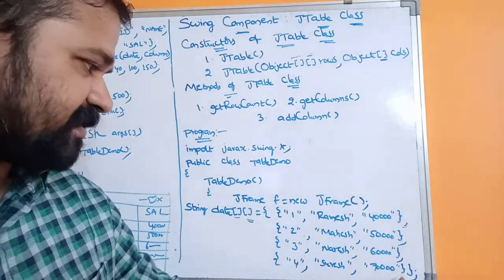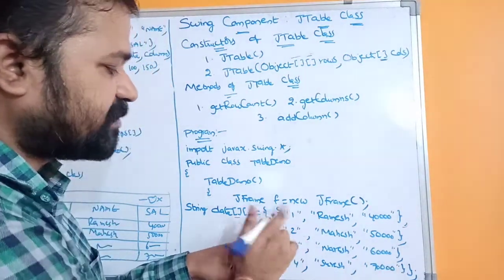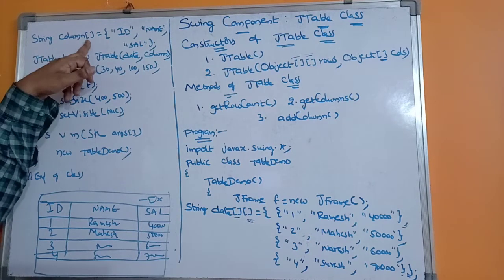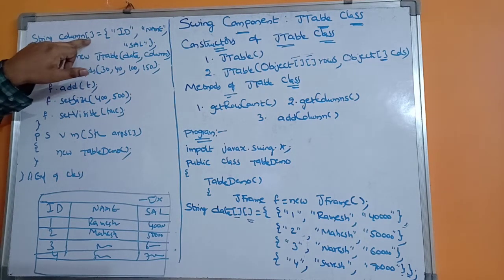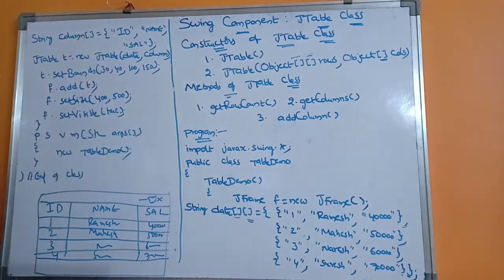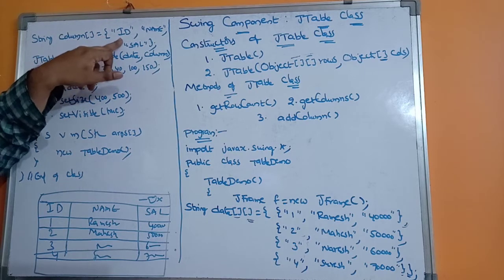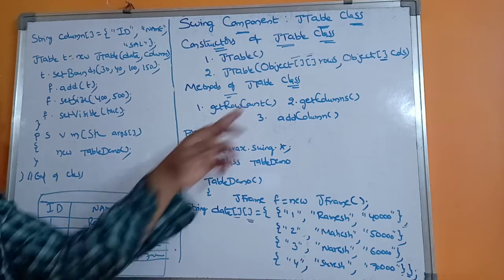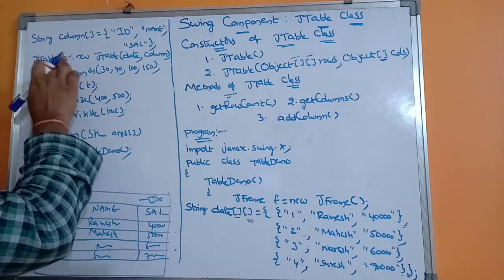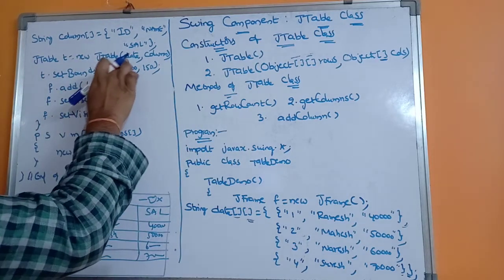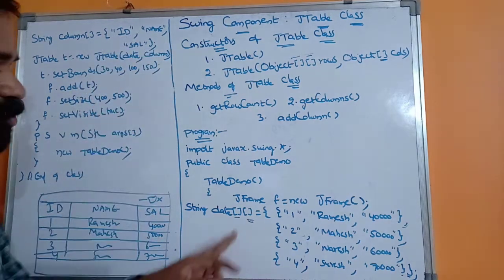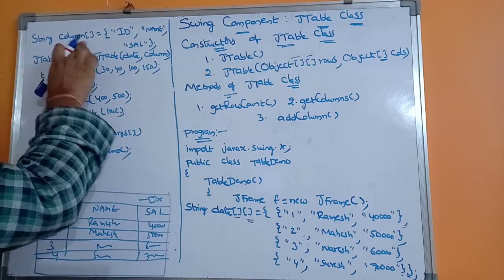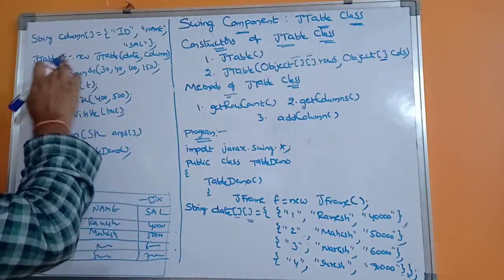Next, we define a one-dimensional String array called column with the headings: ID, Name, Salary. Then we create the JTable using the second constructor: JTable t = new JTable(data, column), where data is the two-dimensional array for rows and column is the one-dimensional array for column headings.